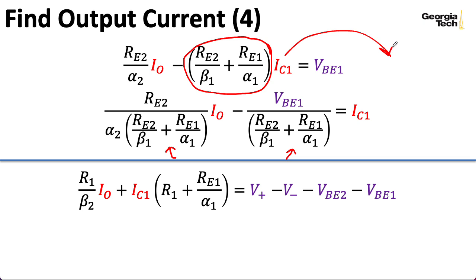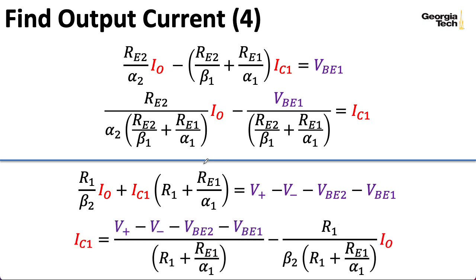And when I divide by this quantity here, I wind up with IC1 by itself. When I move IC1 over to this side, the minus sign goes away. When I move the term associated with VB1 over to this side, I wind up with a minus sign. So, I think that's okay. All right. So, what about the equation on the bottom of the slide? Let's see. I need to divide everything through by this R1 plus RE1 over alpha1 term. I know this is really boring, but we got to do it.